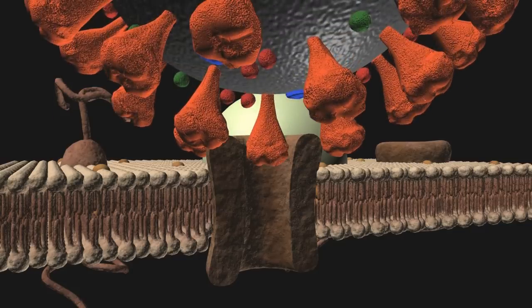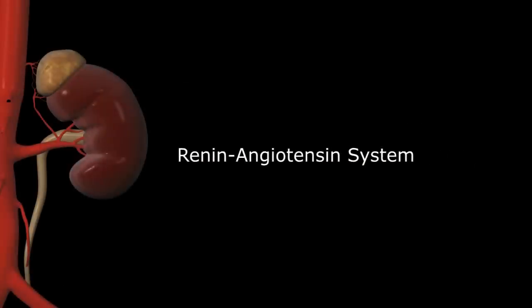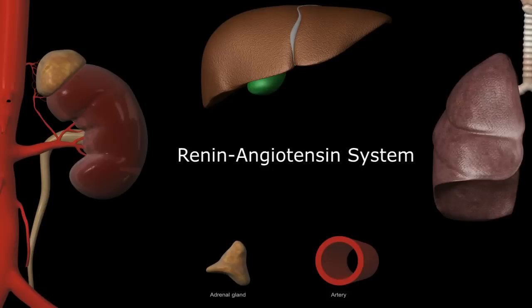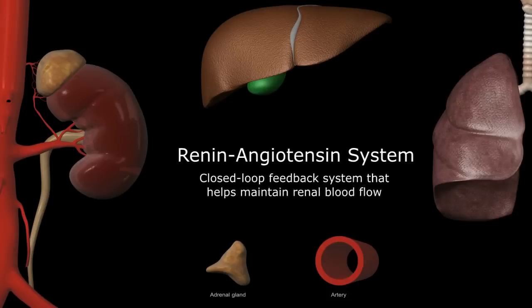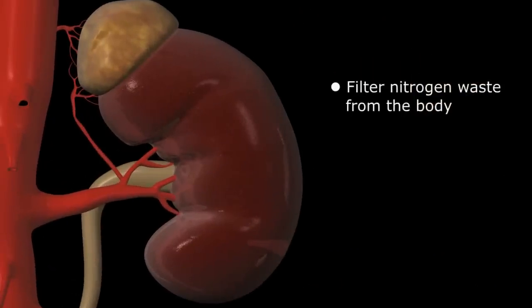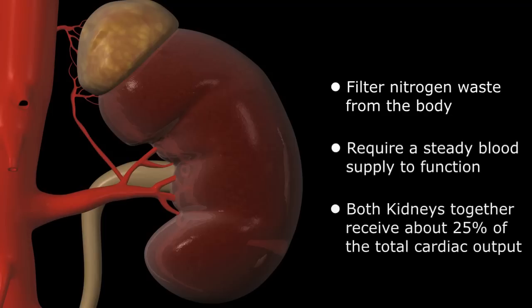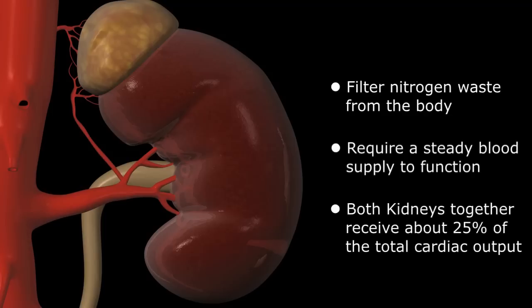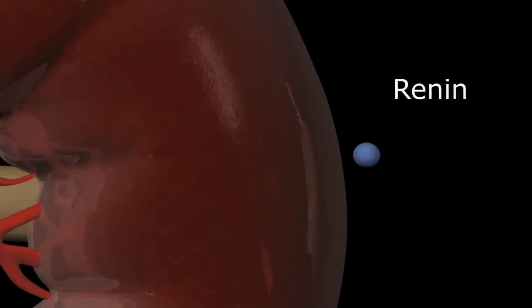To understand the function of ACE2, we first have to review the renin-angiotensin system. Involving the kidneys, liver, lungs, blood vessels, and adrenals, the renin-angiotensin system is a closed-loop feedback mechanism that helps maintain renal blood flow. The kidneys are designed to filter the nitrogen waste products of protein metabolism from our bodies. To function normally, they need a steady flow of blood, receiving about 25% of the total cardiac output.